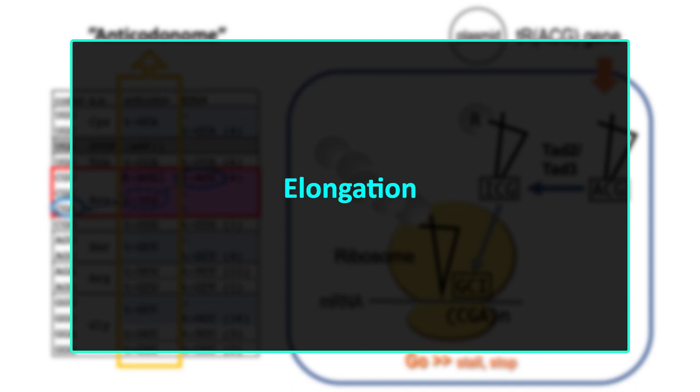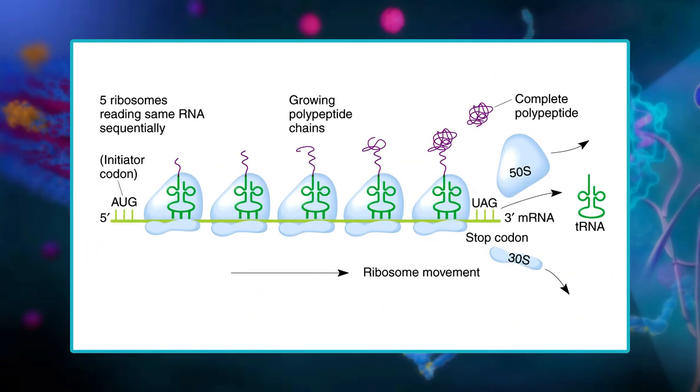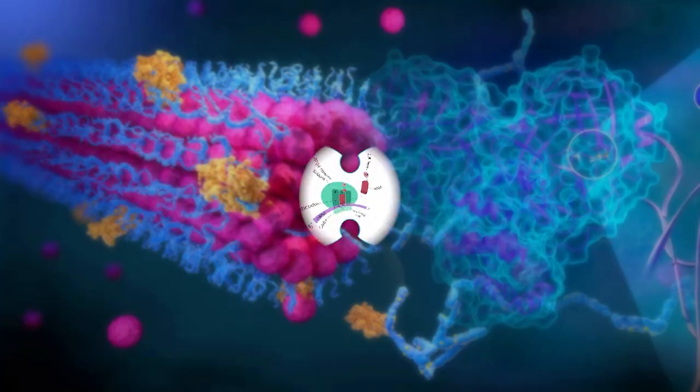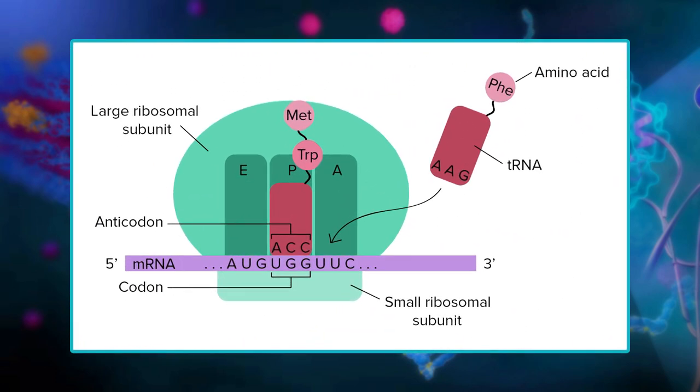Shine-Dalgarno sequences are used because bacterial genes are often transcribed in groups called operons, so one bacterial mRNA can contain the coding sequence for several genes. A Shine-Dalgarno sequence marks the start of each coding sequence, letting the ribosome find the right codon for each gene. In elongation, the polypeptide chain gets longer. After the initiation complex has formed, the first methionine-carrying tRNA starts out in the middle slot of the ribosome called the P site (peptidyl site).